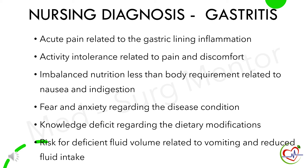Nursing diagnoses for patients with gastritis are: acute pain related to gastric lining inflammation, activity intolerance related to pain and discomfort, imbalanced nutrition less than body requirements related to nausea and indigestion, fear and anxiety regarding the disease condition, knowledge deficit regarding dietary modifications, and risk for deficient fluid volume related to vomiting and reduced fluid intake.